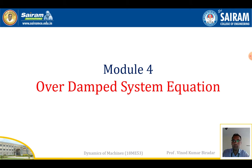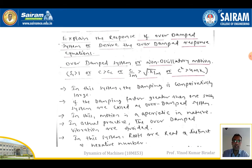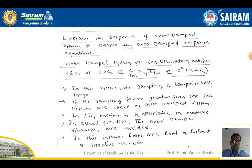In damped vibration, there are different types of damping: overdamped, underdamped, and critically damped. Overdamped means the zeta value is greater than one — such systems are called overdamped systems. It is also called non-oscillatory motion. If the damping is greater than critical damping, the system is overdamped.